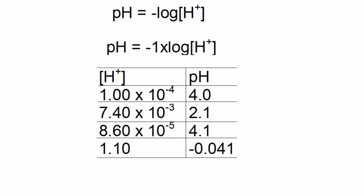Hopefully you discovered the same thing. That hydrogen ion values with negative exponents give positive pH values and very high concentrations of hydrogen ion, such as 1.1, or hydrogen ion values with positive exponents give you negative pH values. Thank you.